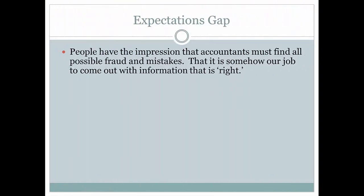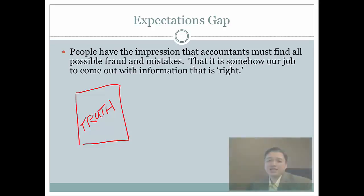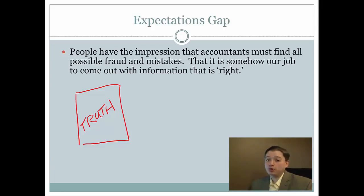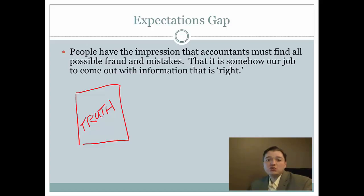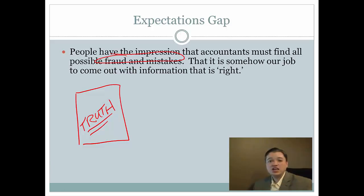The last thing to talk about in this segment is what we call the expectations gap. People seem to think that there is truth in financial accounting — that you have exact numbers. The reality is there is no truth in financial accounting. There are rules to follow that you can follow appropriately or inappropriately. But think about depreciation: I'm assuming a piece of equipment is going to last for 10 years — it could last for 15, it could last for 2. Since I don't know it for sure, I can't really get to anything like truth. I can just follow the rules.